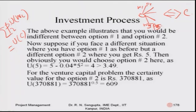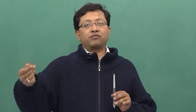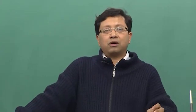Now suppose you face a different situation where option one is still ten and zero with probability half and half, but a different option gives you five rupees for certain. In that case you would obviously choose five, because the certainty equivalent of the gamble is only 3.49. Five gives a higher utility — calculating it comes out to be four — so you would be more inclined to take the certainty decision of five rather than the gamble.